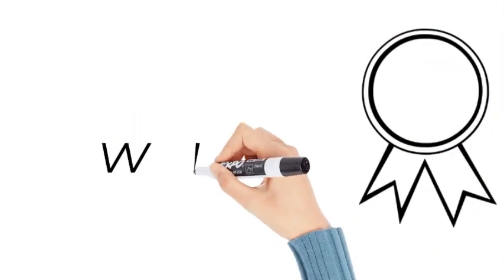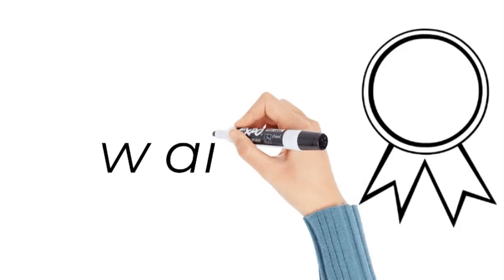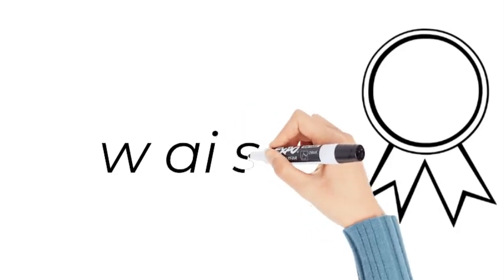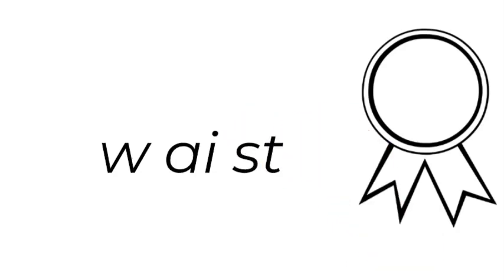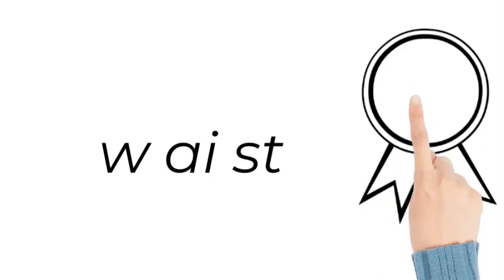Now how do you spell waist? W, a, i—don't forget the i—s, t. W, a, i, s, t.